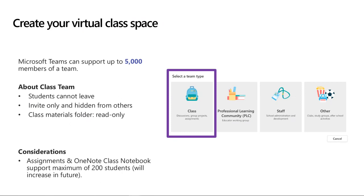There are four types of teams. A class team activates the assignments features and creates a OneNote Class Notebook. A Professional Learning Community team creates a OneNote notebook built around a PLC model. A staff team is for collaborating and working together as staff. The other team type can be used any way you want — the key difference is it doesn't create a OneNote notebook and doesn't activate the assignment features.